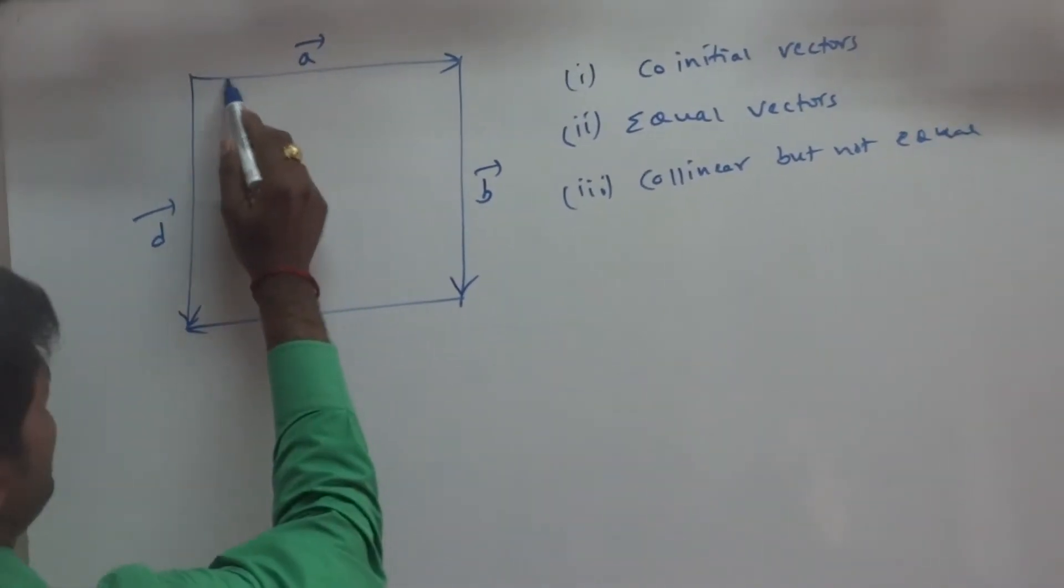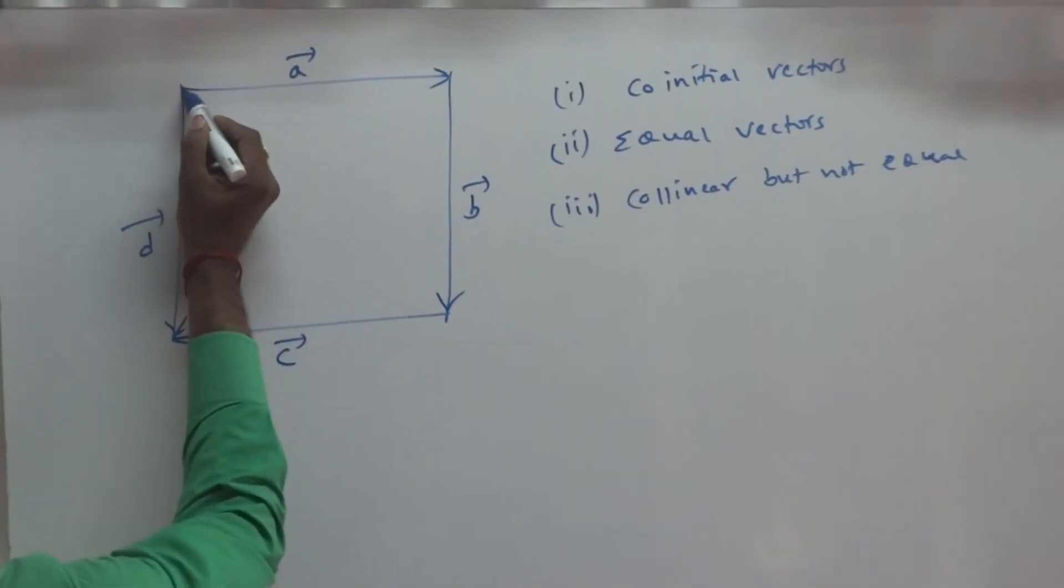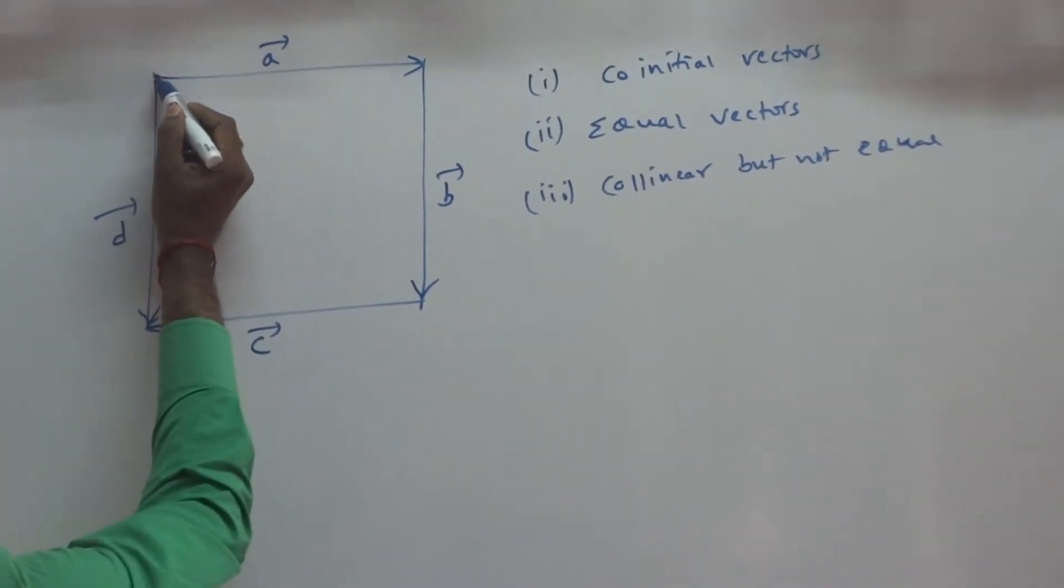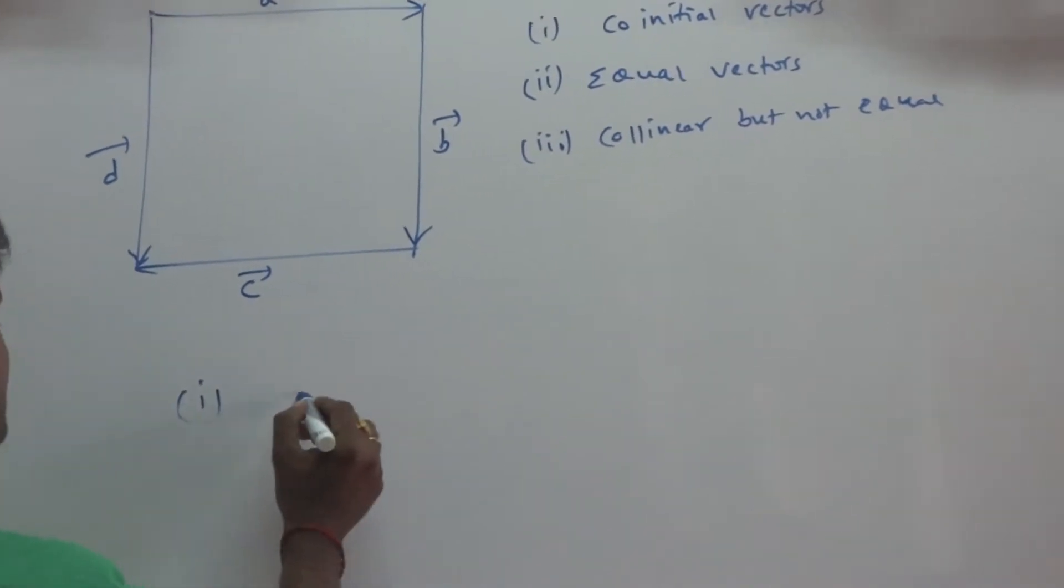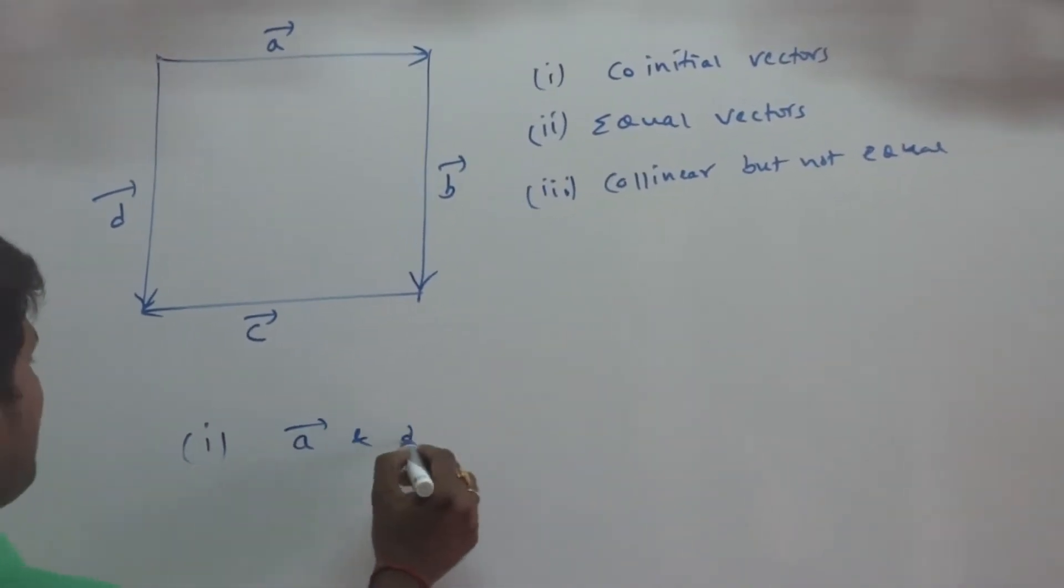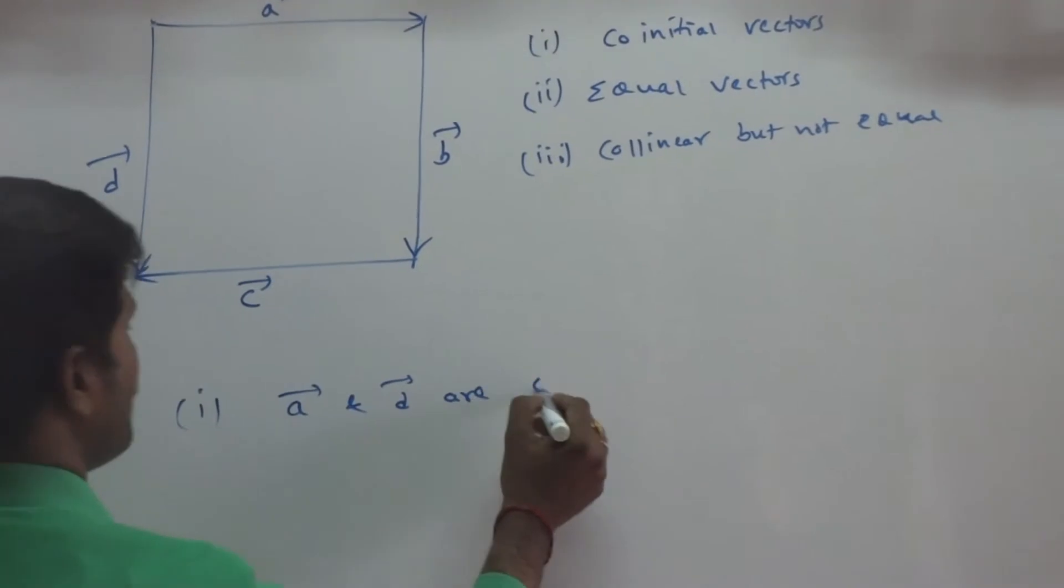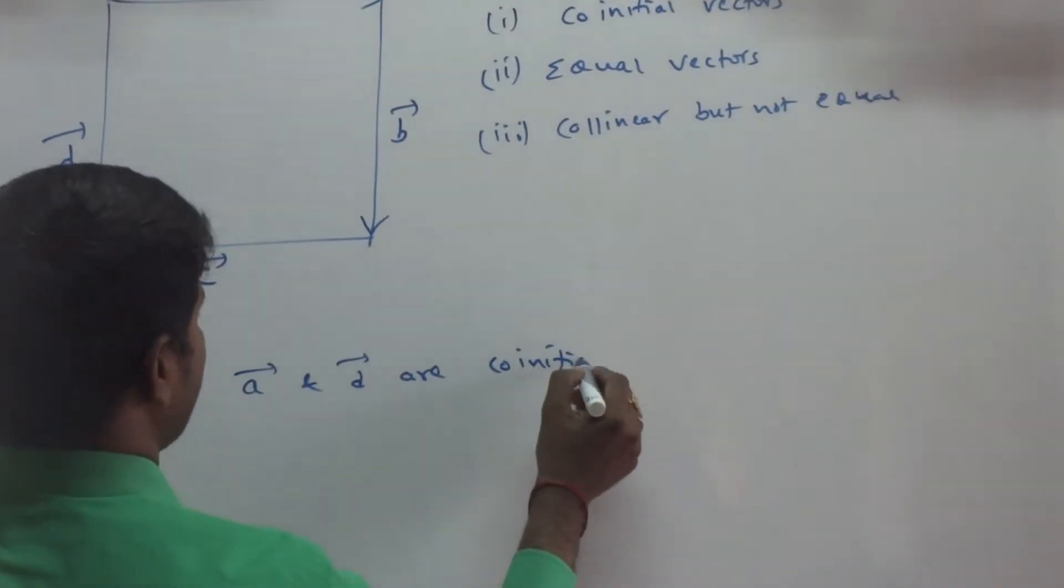If we observe vector A and vector D, both starting with same place, then co-initial point is same for these two vectors. Then we can say, the answer is, vector A and vector D are co-initial vectors.